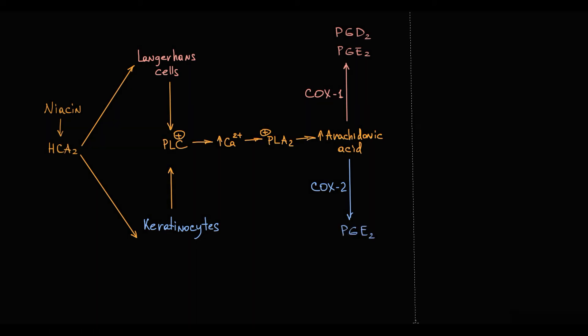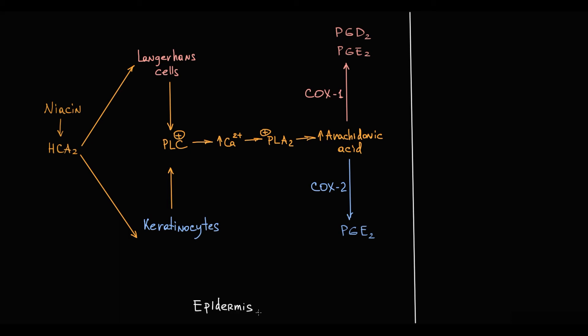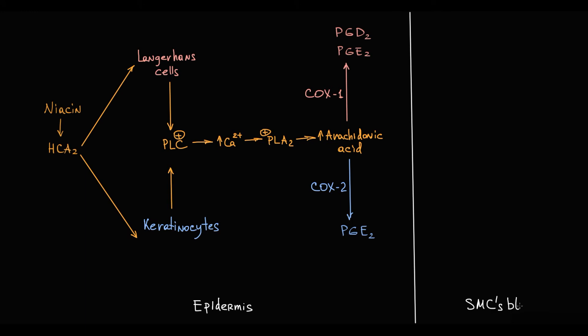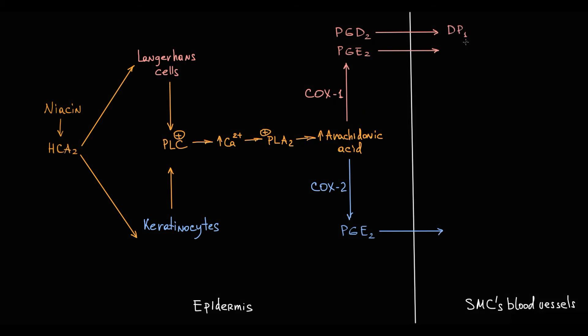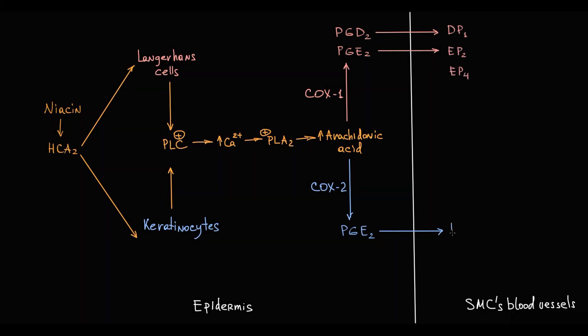These prostaglandins from epidermis cross the dermis and act on their receptors localized on smooth muscle cells of dermal blood vessels. Prostaglandin D2 acts on DP1 receptor and prostaglandin E2 acts on EP receptor type 2 and type 4.